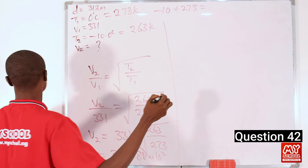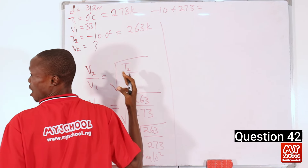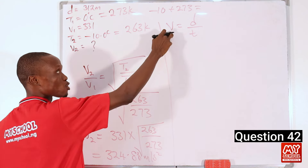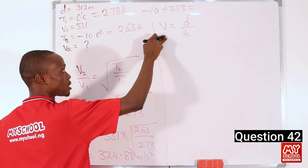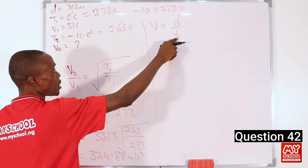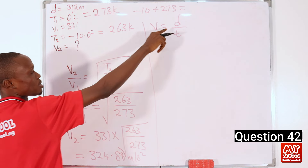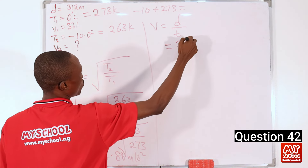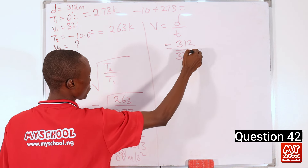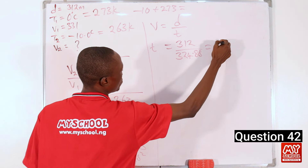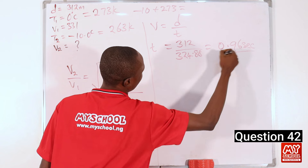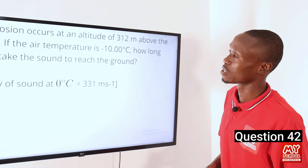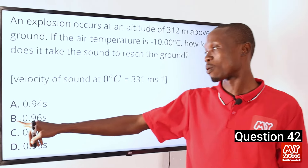But we are actually looking for time — how long it will take the sound to reach the ground. Remember that velocity equals distance over time. The altitude stands for the vertical distance. So T equals D over V, which is 312 divided by 324.88, giving us T equals 0.96 seconds. From our calculation we got 0.96 seconds, so that makes option B the correct option.